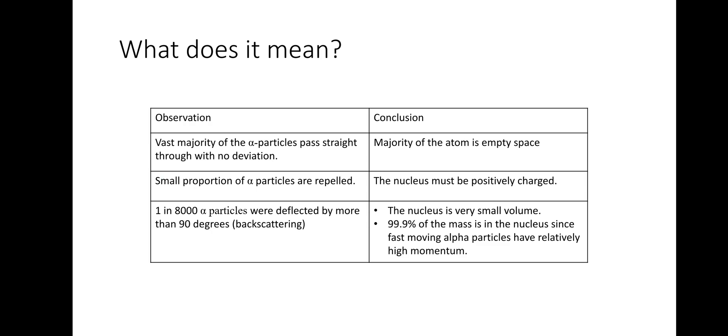So the second observation, a small proportion of the alpha particles were repelled. So that simply means that the nucleus must have contained positive charge. It was known that the alpha particles, and alpha particles, obviously two protons and two neutrons, were positively charged. Therefore, the conclusion was that the nucleus must be the same for the electrostatic repulsion to occur.